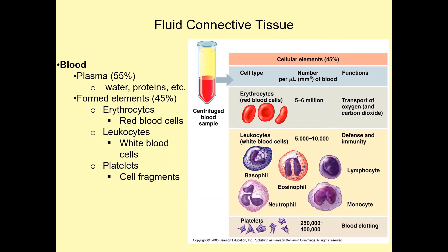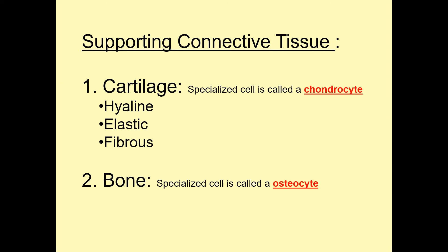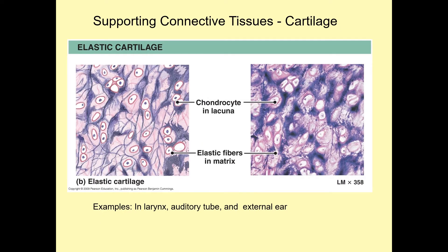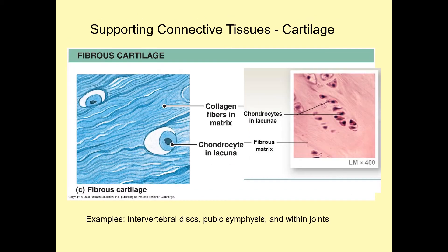Blood is one example of fluid connective tissue — it has 55% plasma and 45% formed elements, the formed elements being erythrocytes, leukocytes, and platelets. Last, we have supporting connective tissues: cartilage and bone. Hyaline cartilage has lots of matrix with chondrocytes in the lacunae within the matrix. Elastic cartilage has elastic fibers going all through the matrix, and fibrocartilage has collagen fibers going through the matrix.